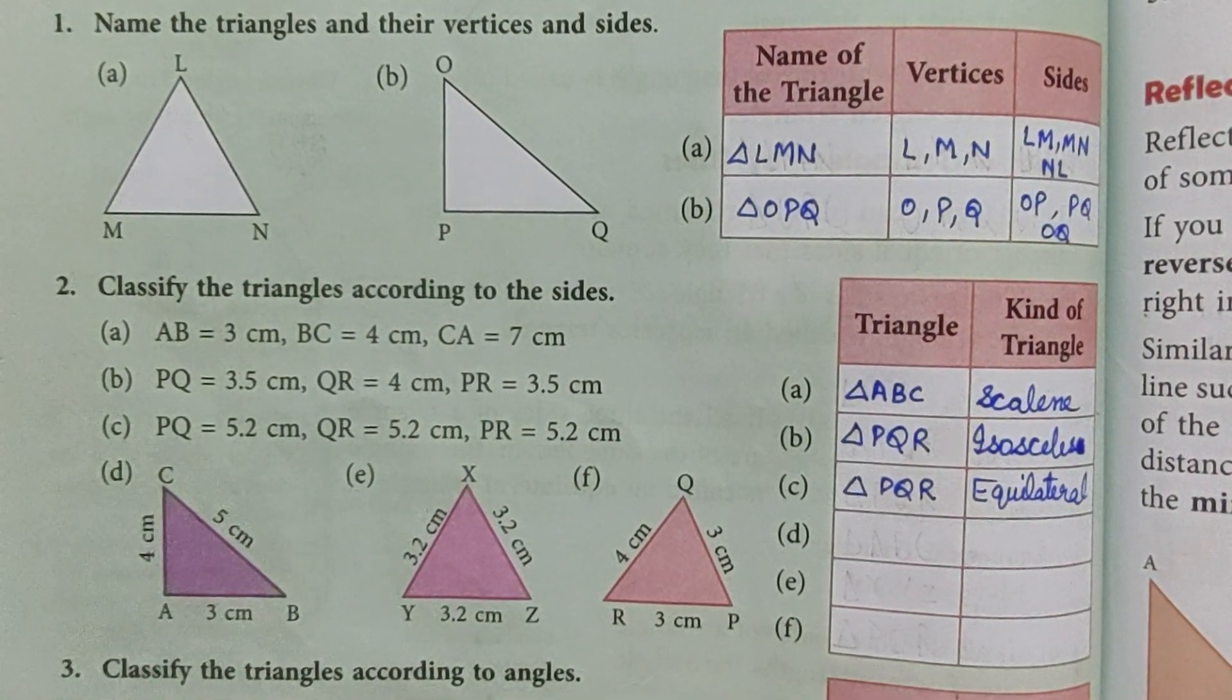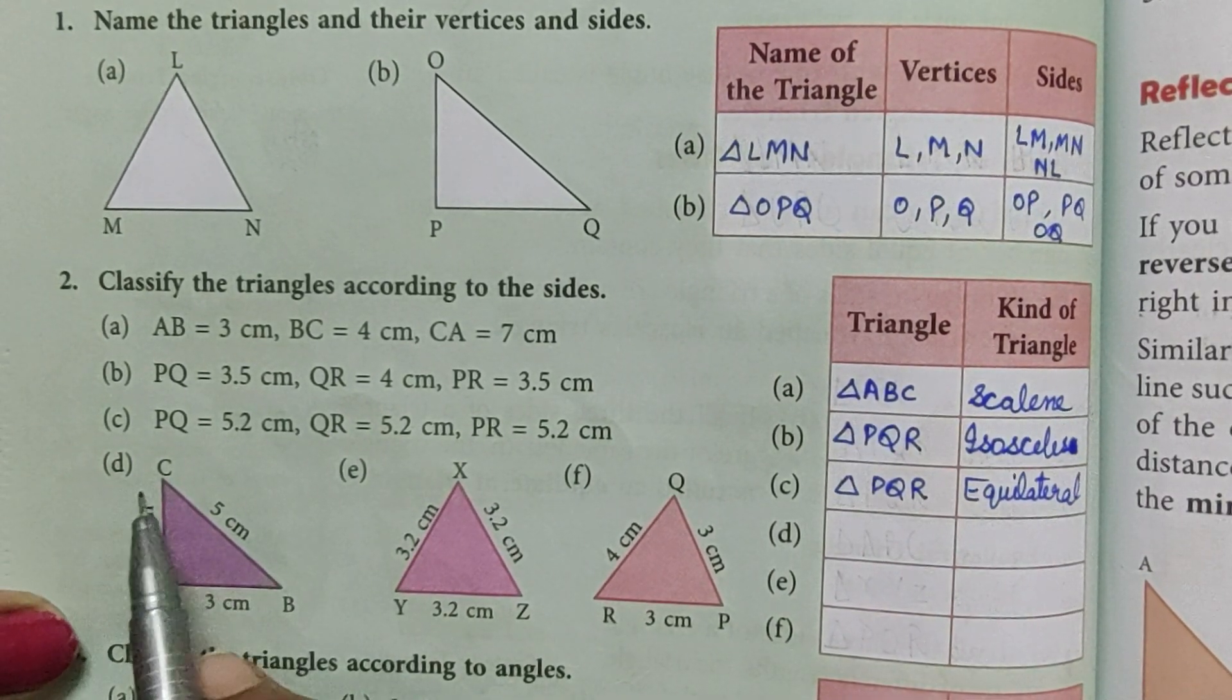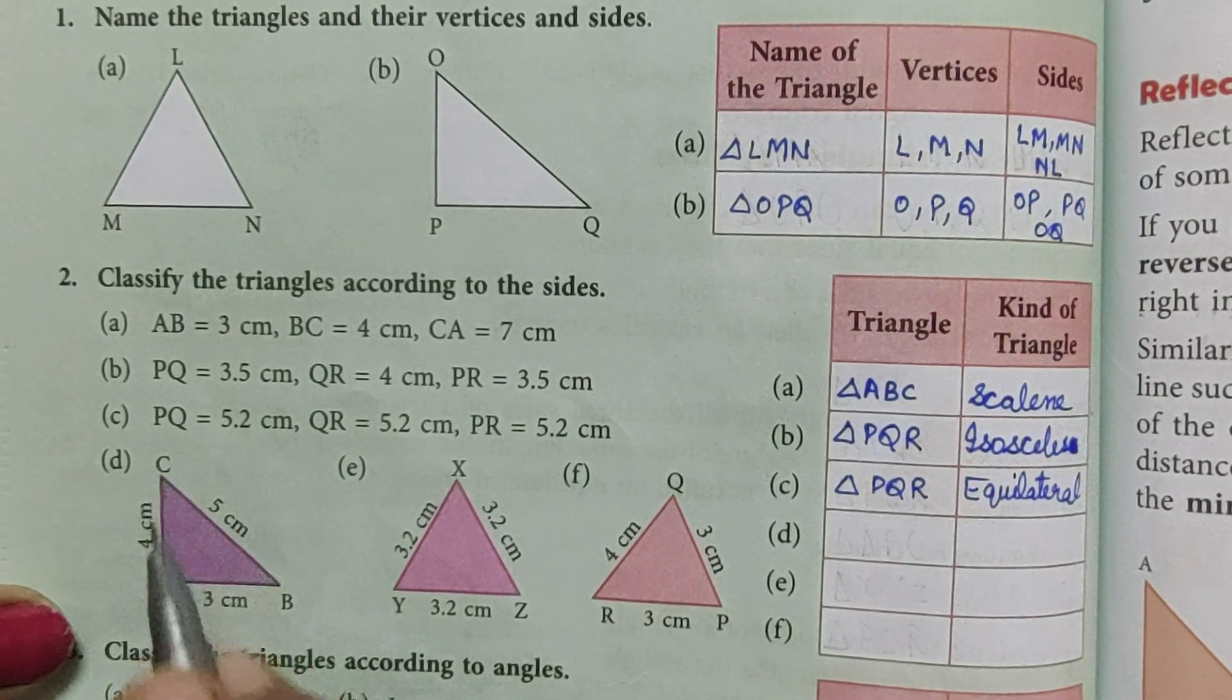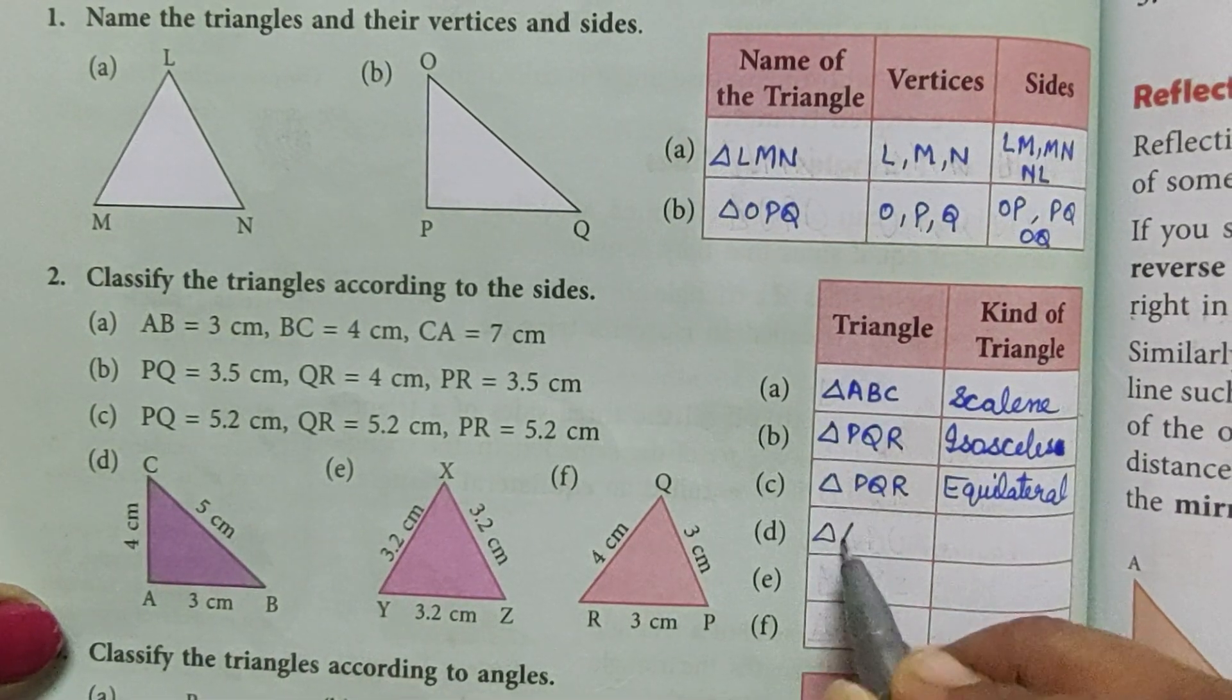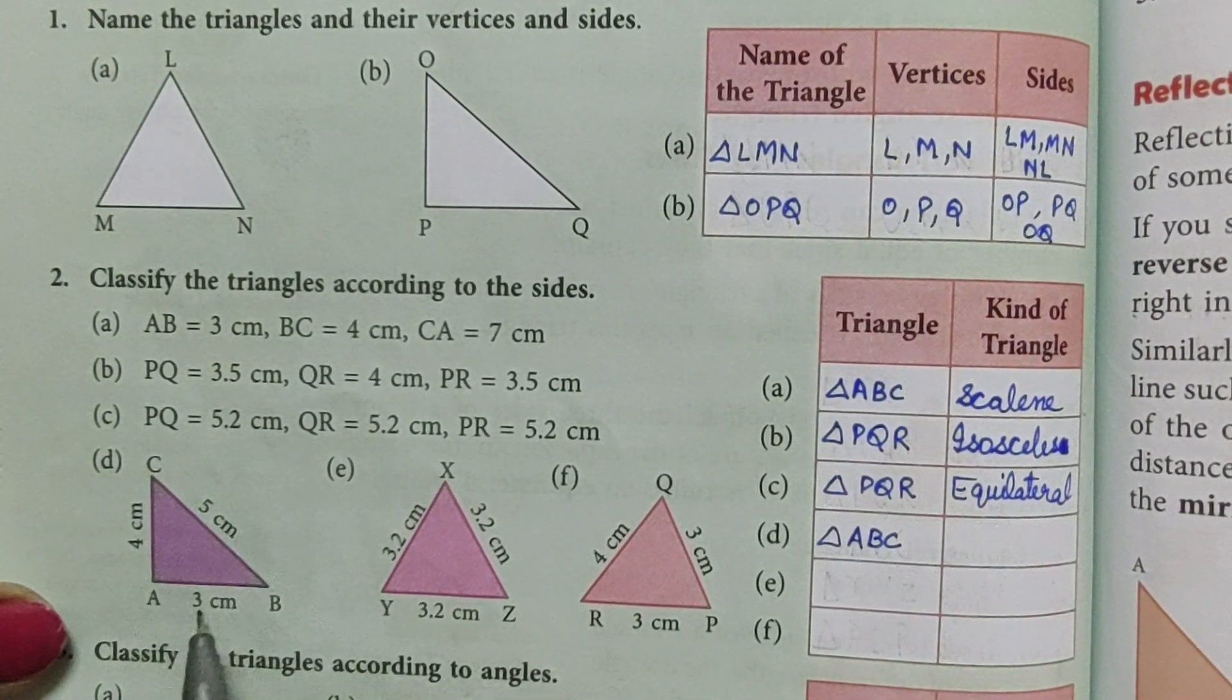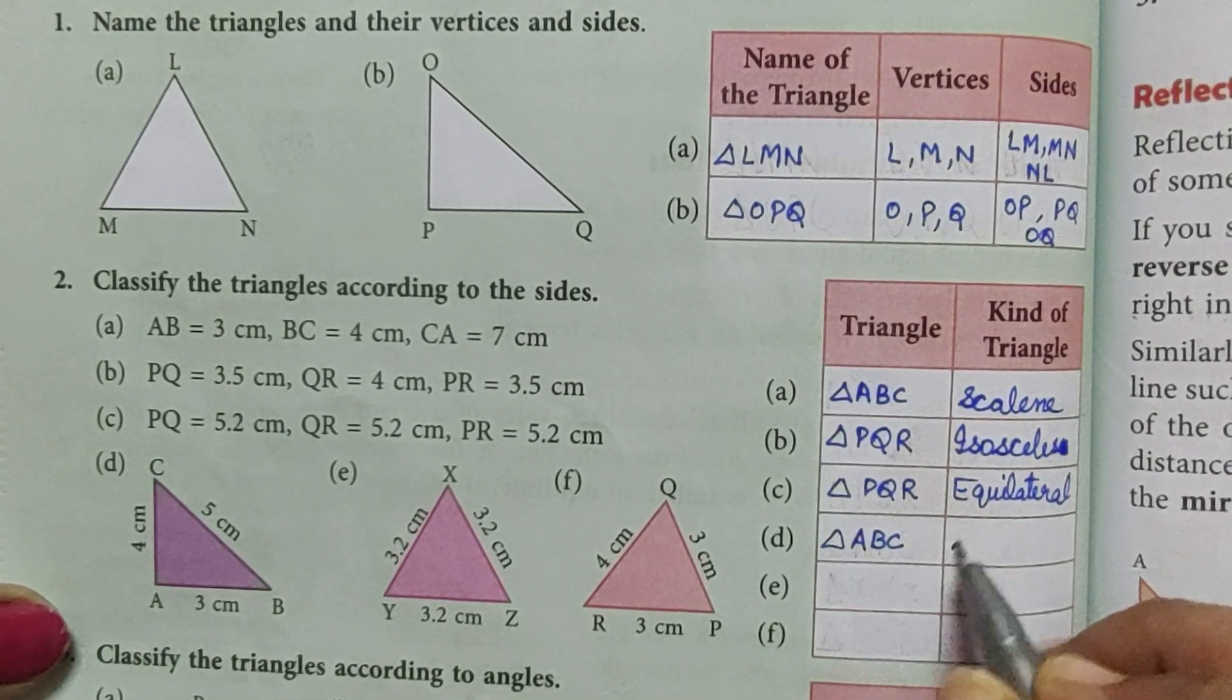Now we have measurement with the figures also given. Now D, the triangle D is ABC. Triangle ABC, all the sides are different, so the triangle is scalene.